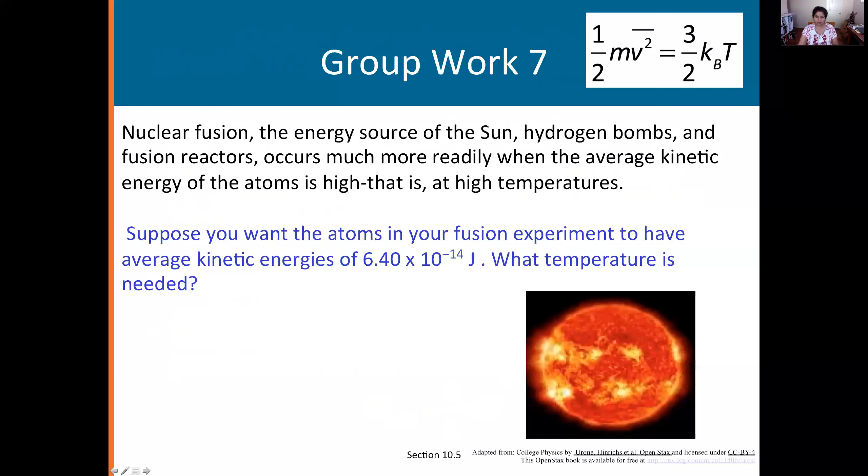Let's do a simple problem on this. Nuclear fusion, the energy source of the Sun, hydrogen bombs and fusion reactors, occurs much more readily when the average kinetic energy of the atoms is high. That is the temperature is high. Suppose you want the atoms for your fusion experiment to have the average kinetic energies of these many joules. What temperature is needed? So I need to connect my average kinetic energy to temperature.